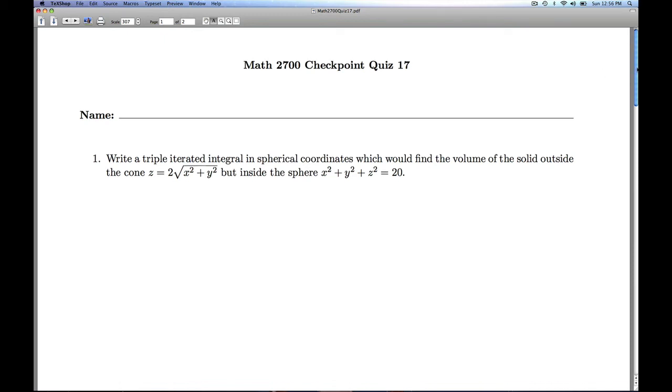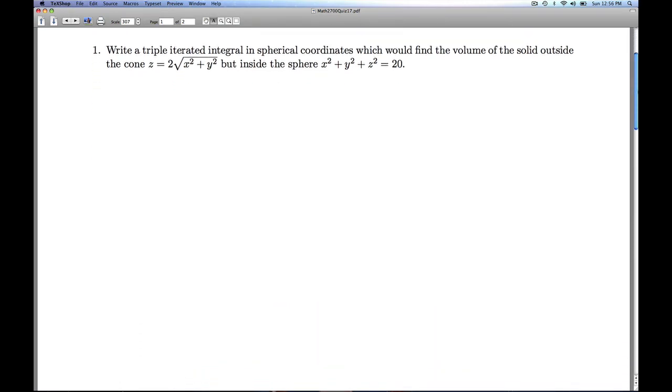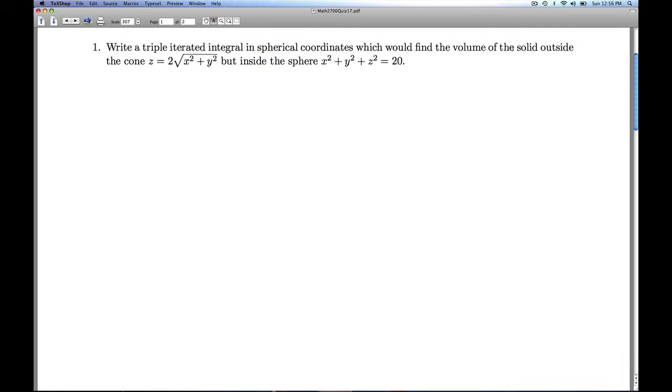Hi folks, this is Calc 3 Checkpoint Quiz 17. We're asked to write a triple iterated integral in spherical coordinates that would find the volume between a couple of surfaces. I want it to be outside the cone z equals 2 square root x squared plus y squared, but inside the sphere x squared plus y squared plus z squared is 20.